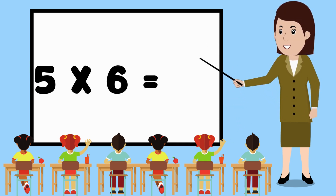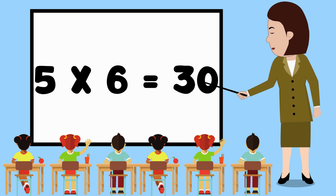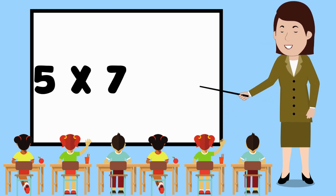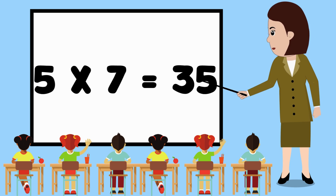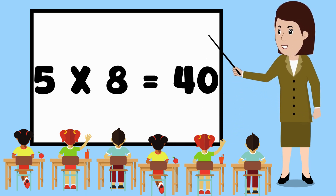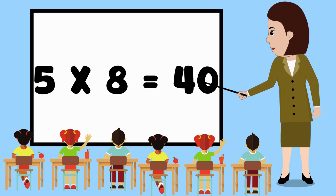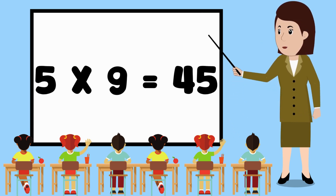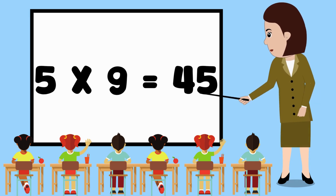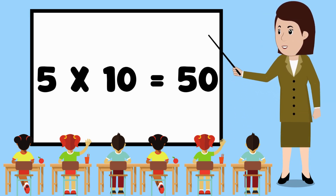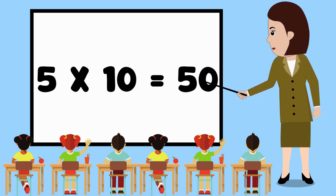5 6s are 30. 5 7s are 35. 5 8s are 40. 5 9s are 45. 5 10s are 50.